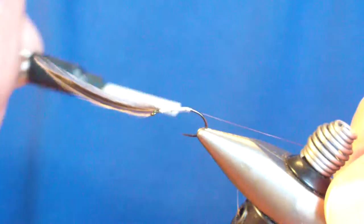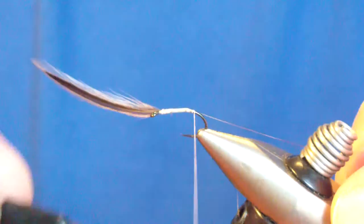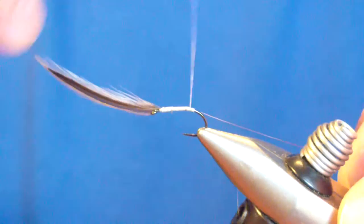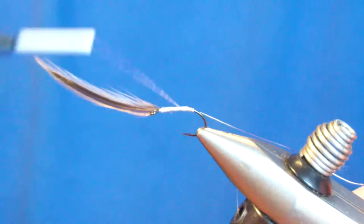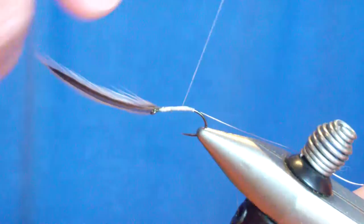Back to a point where we're about even with where the barb would be, just slightly into the bend of the hook. And then we're going to take our thread and build our body. It's a slight body, just going to put a slight taper on it.